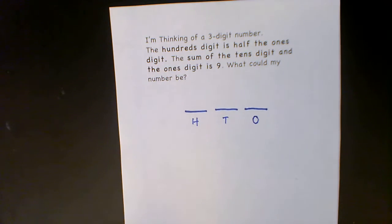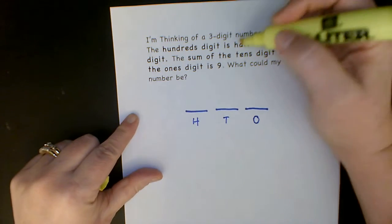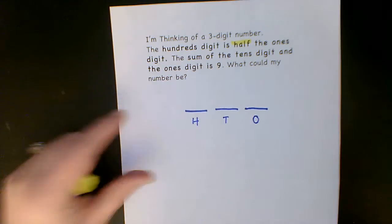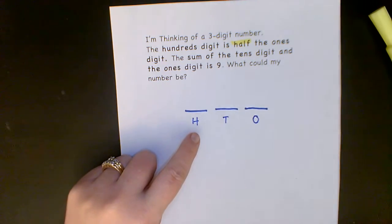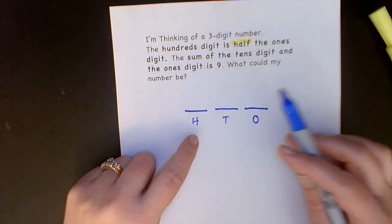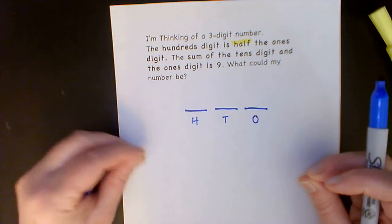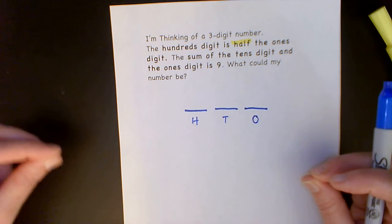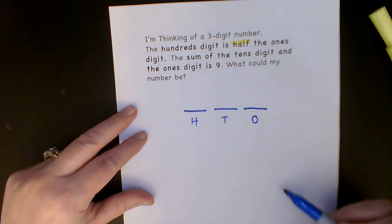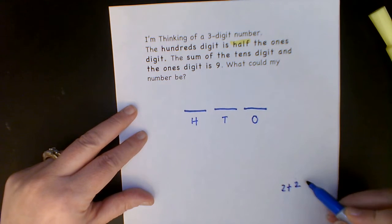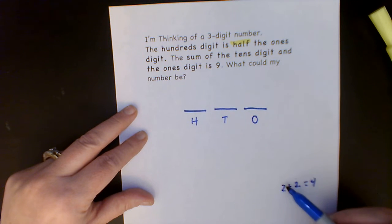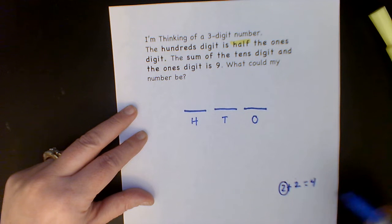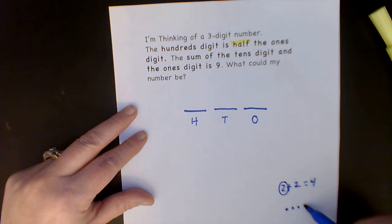The hundreds digit is half of the ones digit. Well, I know that half means that there can be a double that makes it, and I'm going to take one part of that. So for example, two plus two is a double and that equals four. So half of four would be one of these.